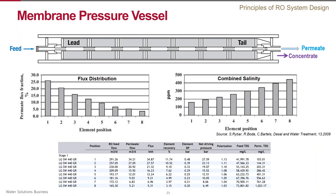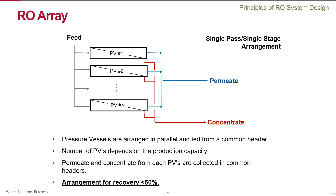As you can see in the table below, this is an example of how Q-plus software calculates the distribution of various parameters along the pressure vessel for each individual element. Several pressure vessels can be arranged in groups — sometimes in tens or even hundreds — to form a so-called RO array or RO train.